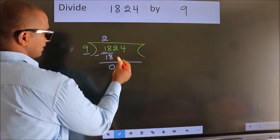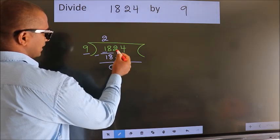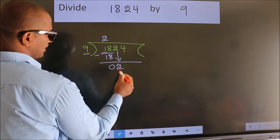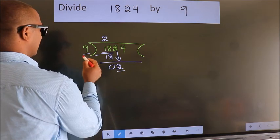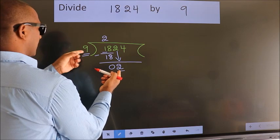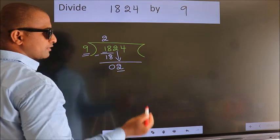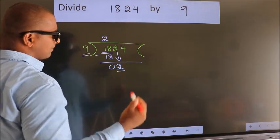After this, bring down the beside number. So 2 down. Here we have 2, here 9. 2 is smaller than 9.